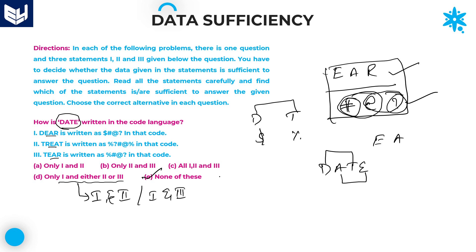None of these, because even taking statements 1 and 2, or 2 and 3, or all three, or only 1 and 2, or 1 and 3 — you will not get the exact code. So option E is the right answer. I hope you enjoyed the session. Thank you very much for watching.